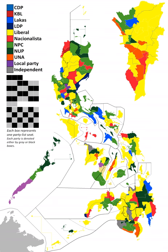In the party list system, the parties contesting the election represent a sector, or several sectors, or an ethnic group. In determining the winners, the entire country is treated as one district. Each party that surpasses the 2% election threshold automatically wins one seat; they can win additional seats in proportion to the number of votes they receive, but they can't have more than three seats. The representatives elected via the party list system, also known as Sectoral Representatives, should comprise at least 20% of the seats. However, since winners from parties that surpass the 2% threshold have not reached the 20% quota ever since the party list system was instituted, parties that received less than 1% of the first preference vote are given one seat each until the 20% quota has been filled up.